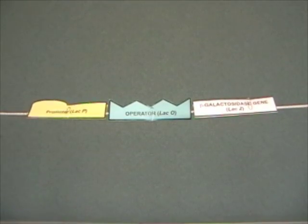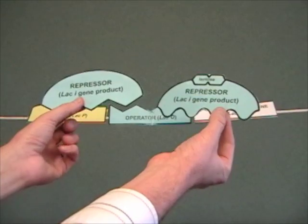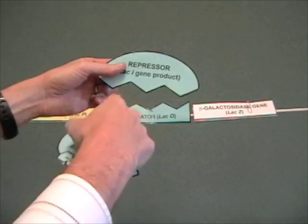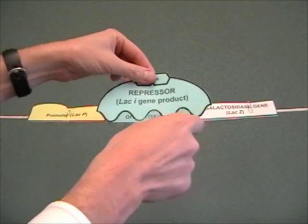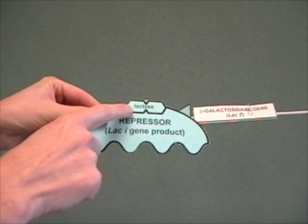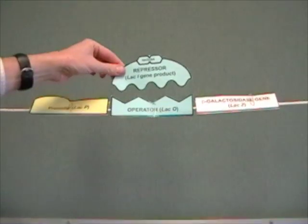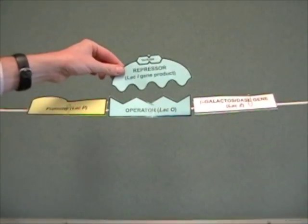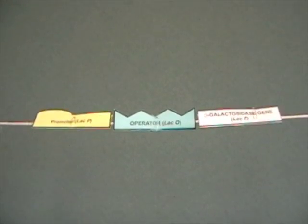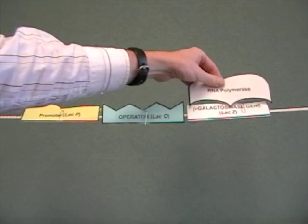However, if lactose is present, the conformation of the repressor changes. Notice how it's got one shape here, and a different shape at the bottom, showing that the conformation of this protein has changed, induced by the binding of lactose. Now the operator can no longer bind onto the repressor, and the repressor is going to diffuse away. RNA polymerase is free to move across this region, and you get expression of beta-galactosidase.